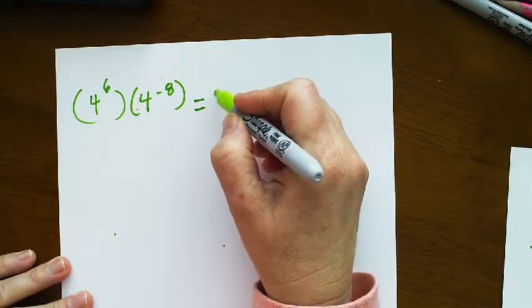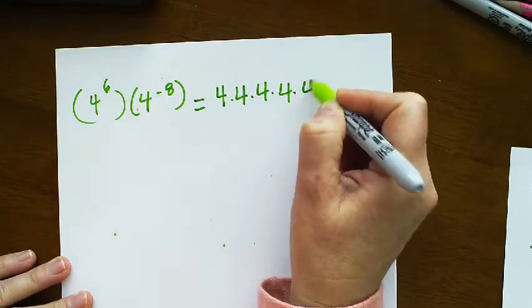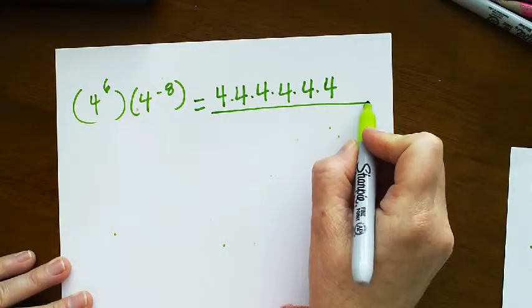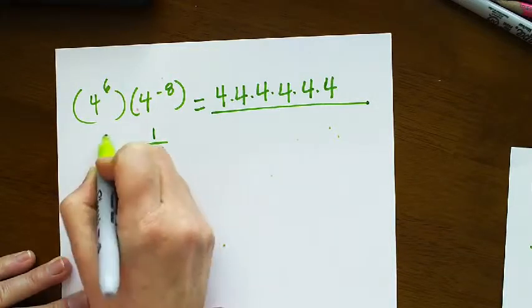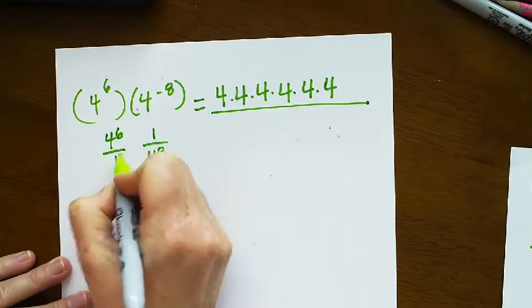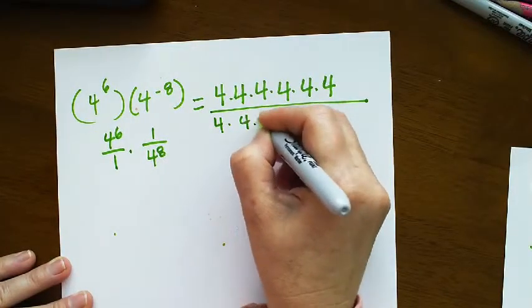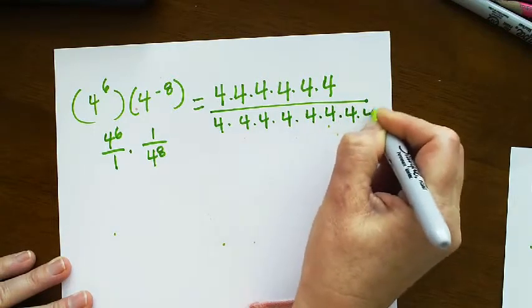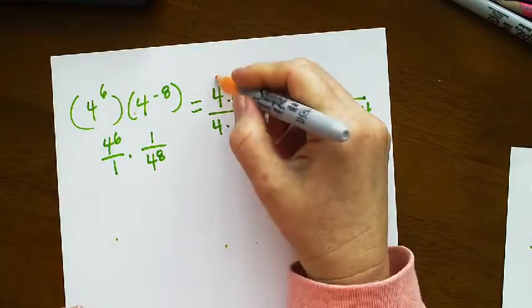4 times itself 6 times divided by, this is 1 over 4 to the 8th. So it's 4 to the 6 over 1 times 1 over 4 to the 8th. And remember 4 divided by 4, any number divided by itself is 1.